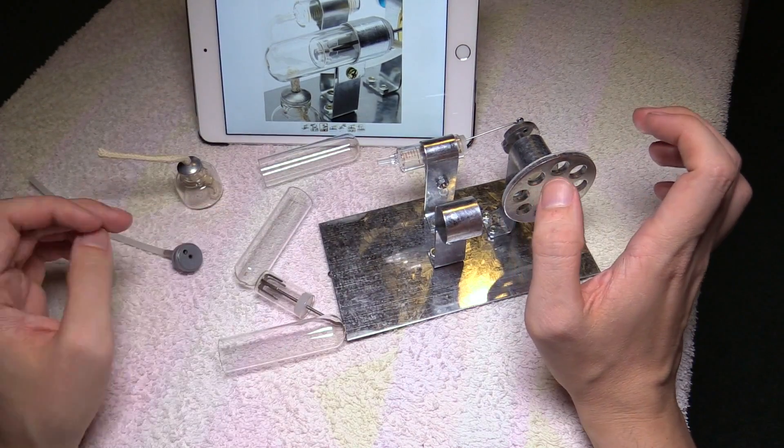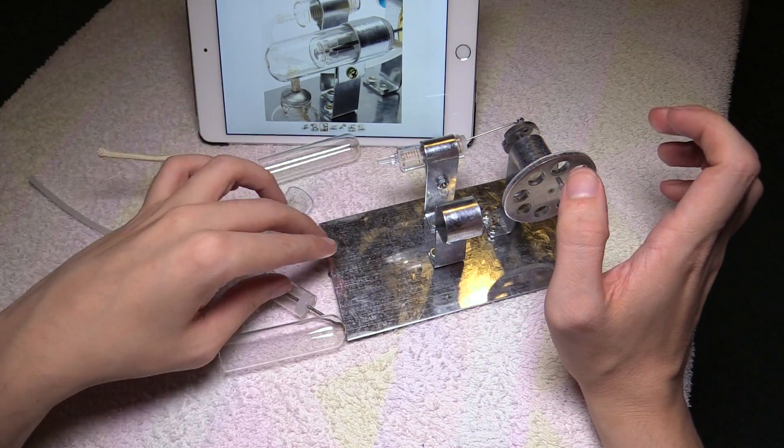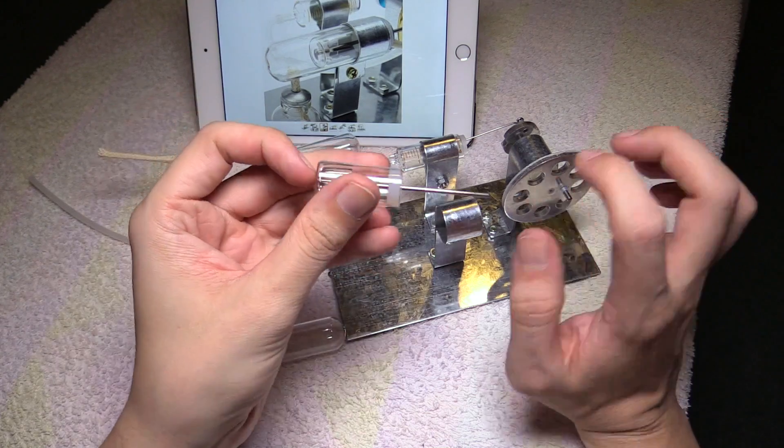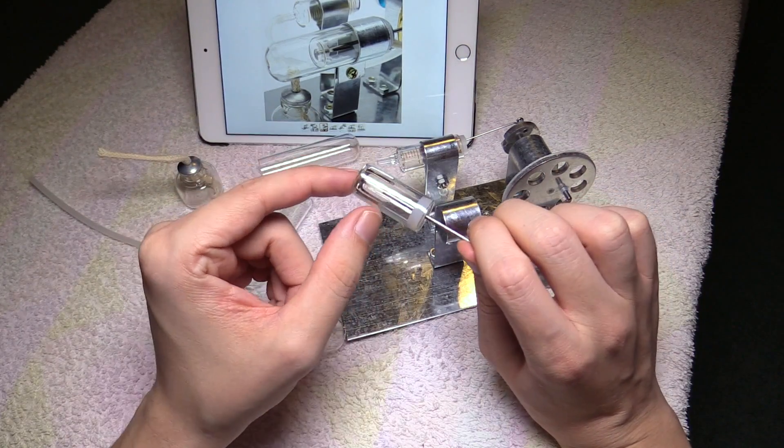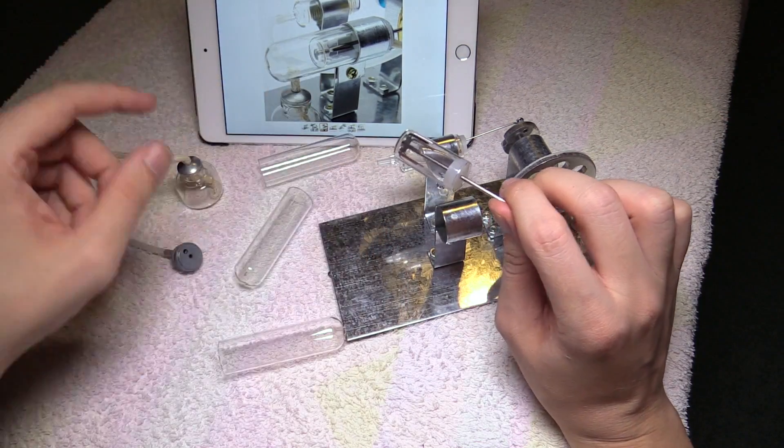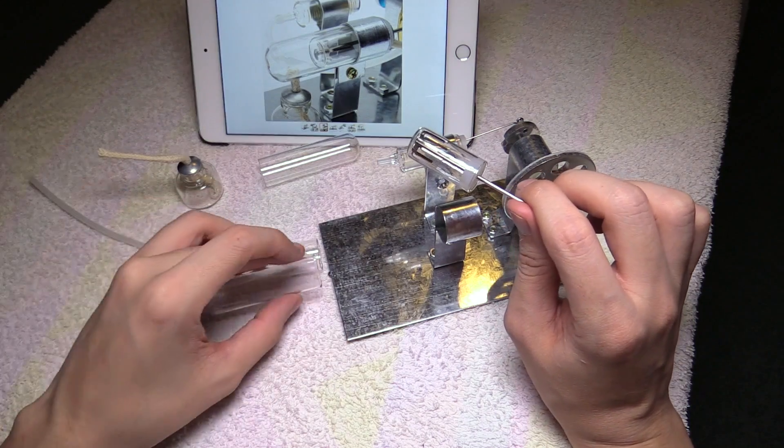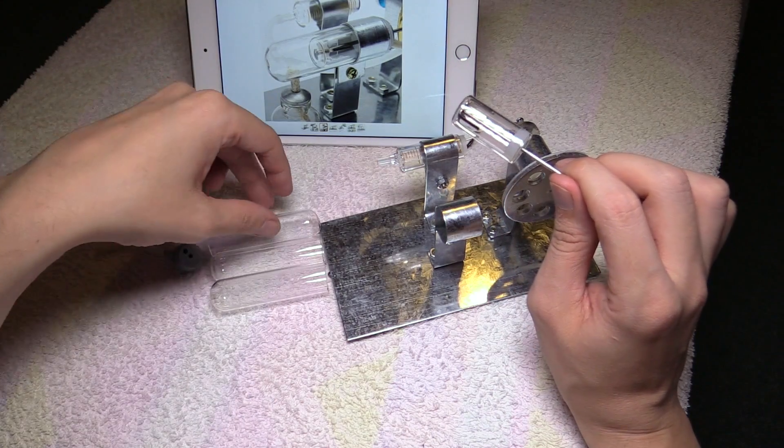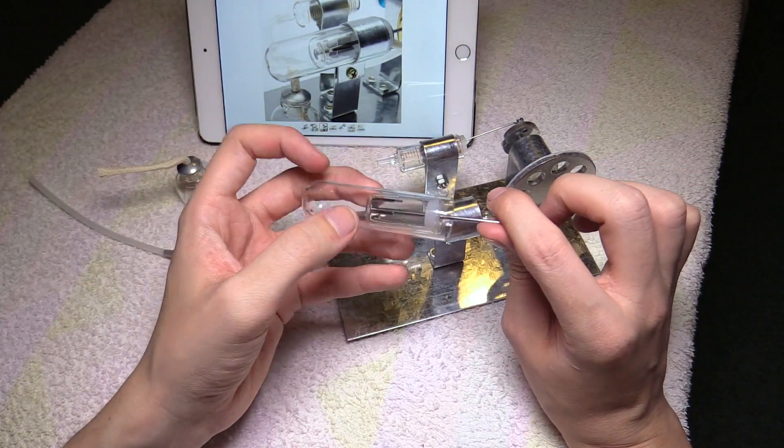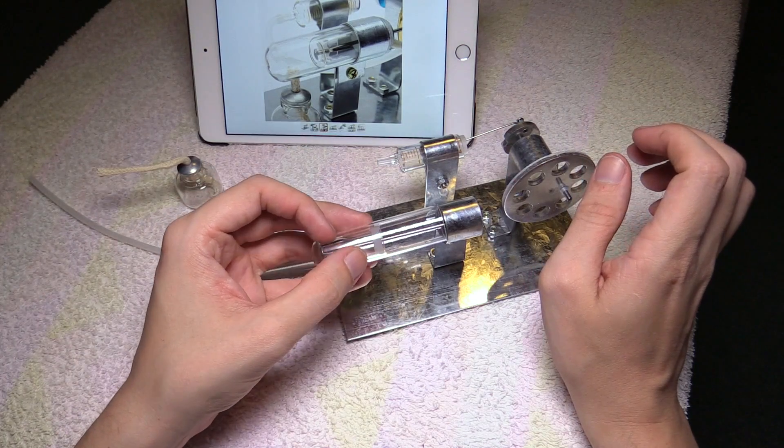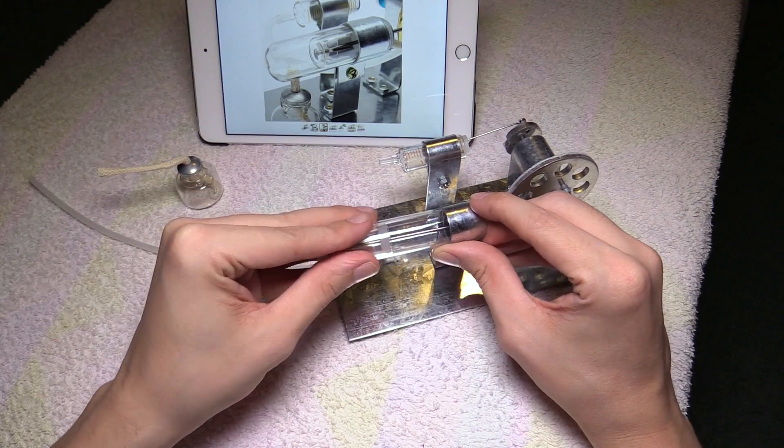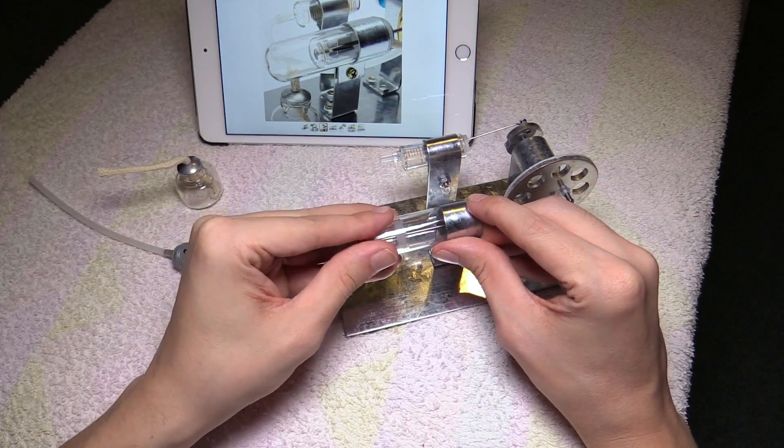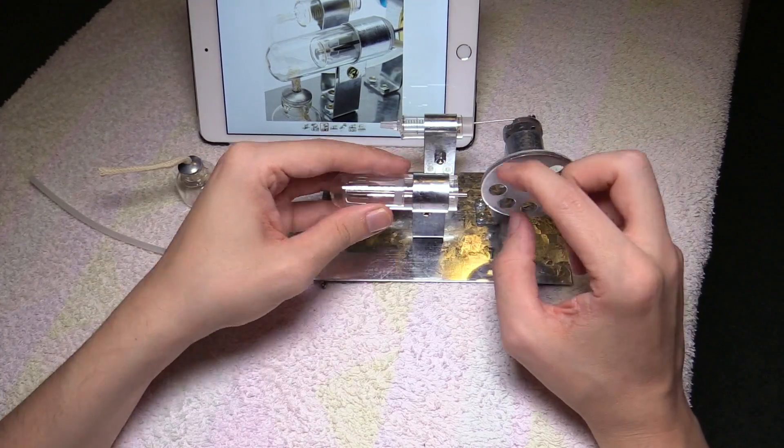We can see that this one here has this weird shape inside. I guess this is the metal that's going to heat up and that goes inside one of these tubes. Are these tubes all the same? They appear to be. So let's put it in this one and then slide that through here.